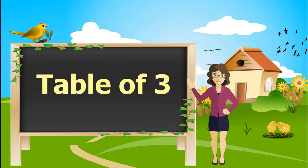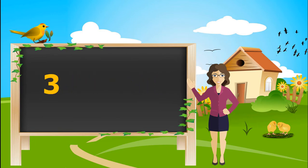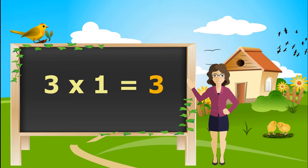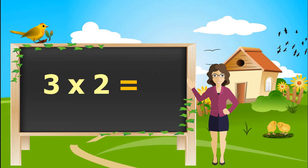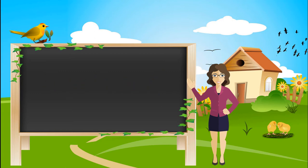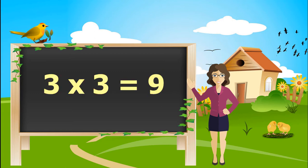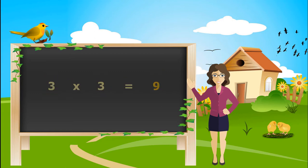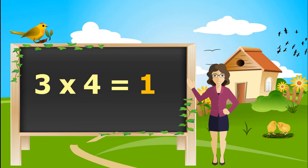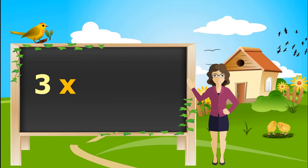Let's learn table of 3. 3 ones is 3. 3 twos are 6. 3 threes are 9. 3 fours are 12. 3 fives are 15.